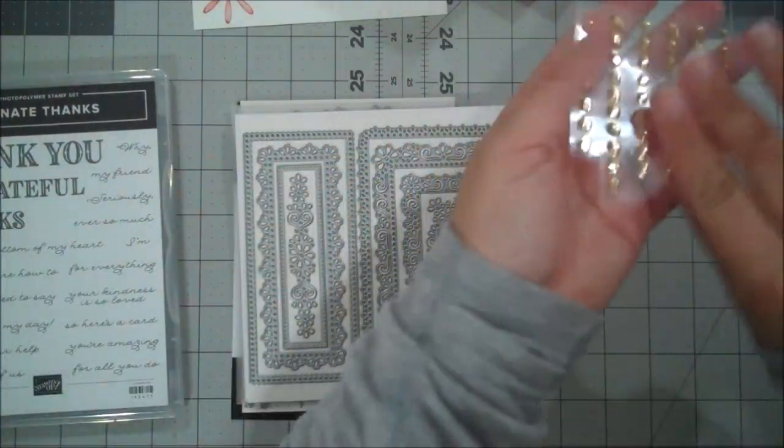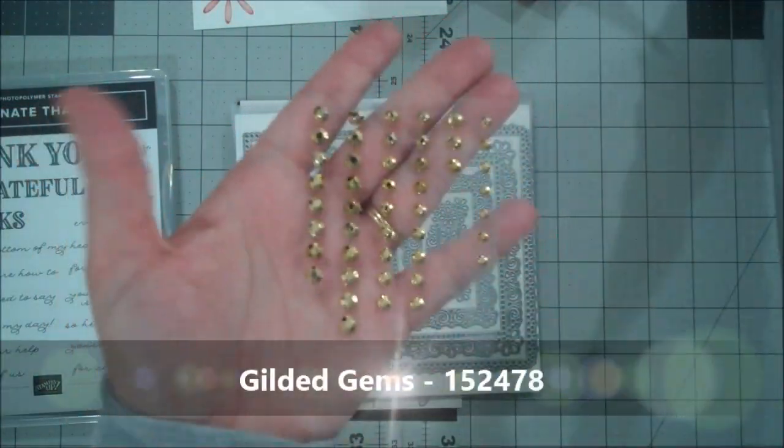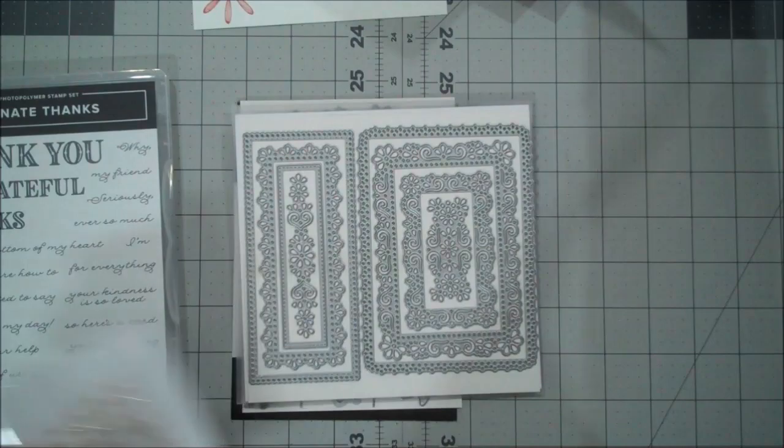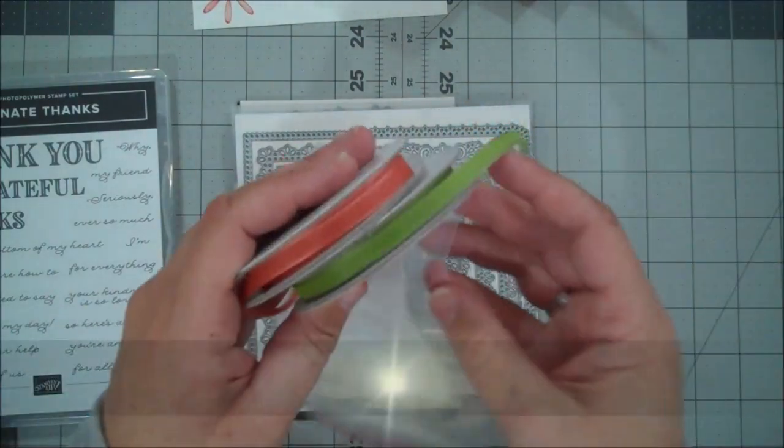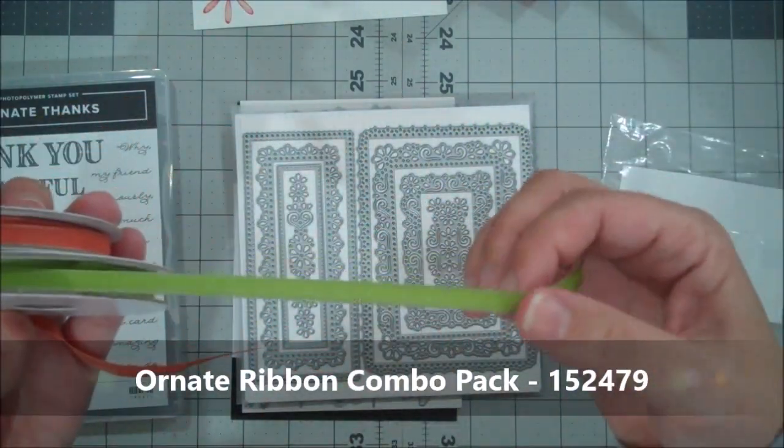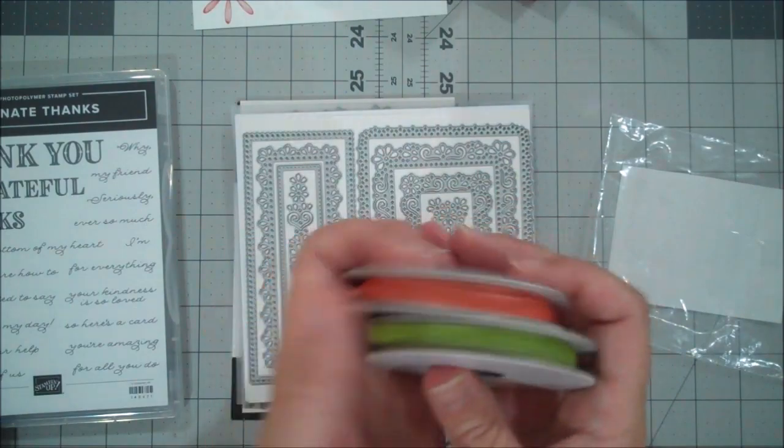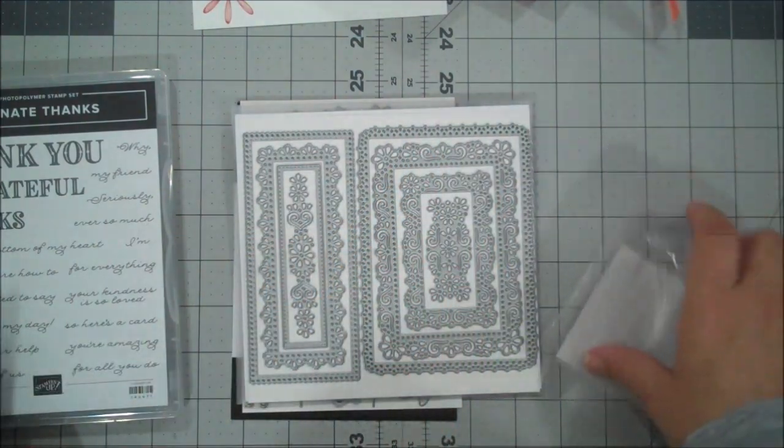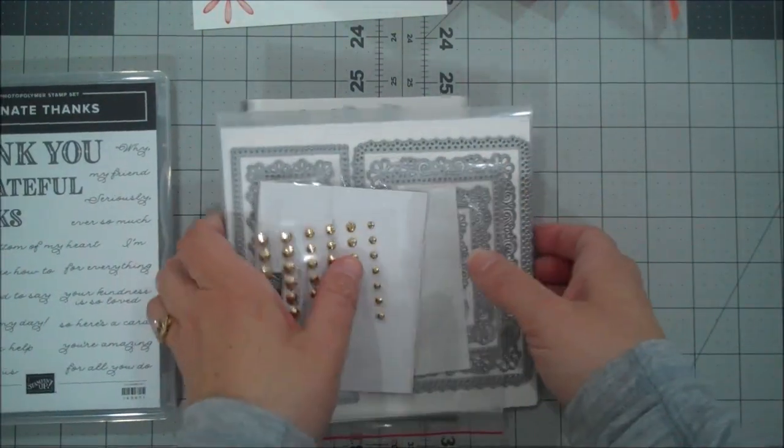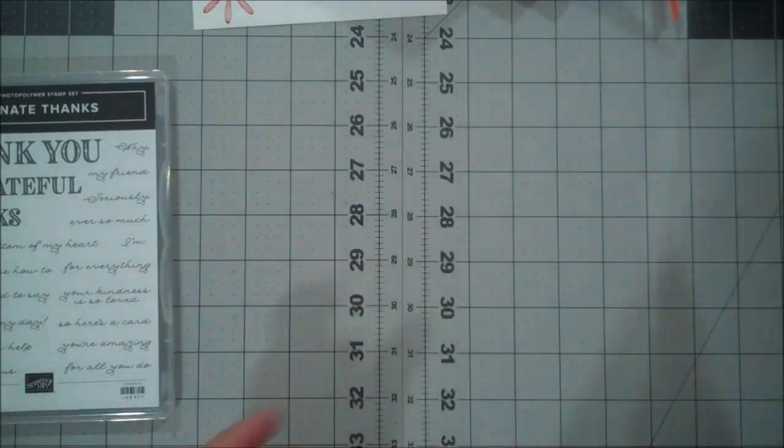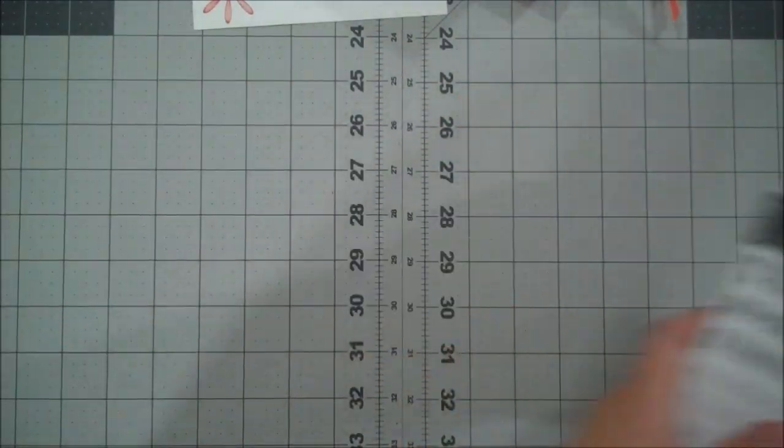There are also some gilded gems that go with that and gold. There is a ribbon combo pack, a gorgeous ribbon that's so easy to tie and create bows. So we are going to use some of this on today's project, a couple items actually.